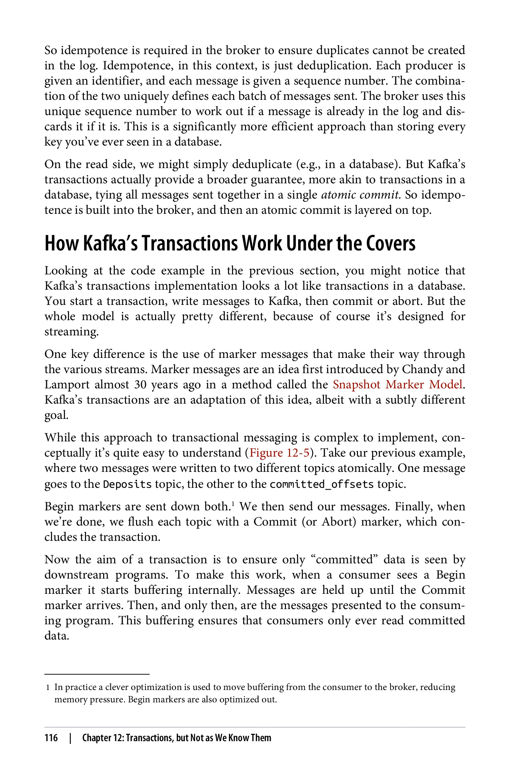Take our previous example, where two messages were written to two different topics atomically. One message goes to the deposits topic, the other to the committed_offsets topic. Begin markers are sent down both. We then send our messages. Finally, when we're done, we flush each topic with a commit or abort marker, which concludes the transaction. Now the aim of a transaction is to ensure only committed data is seen by downstream programs. To make this work, when a consumer sees a begin marker it starts buffering internally. Messages are held up until the commit marker arrives, and only then are the messages presented to the consuming program. This buffering ensures that consumers only ever read committed data.